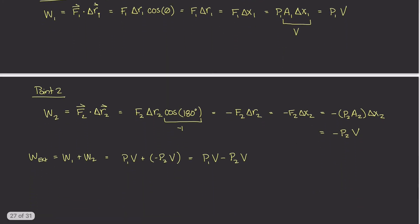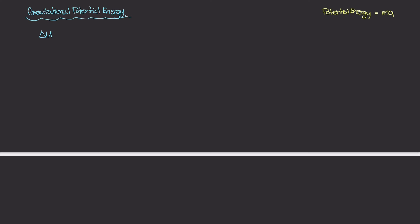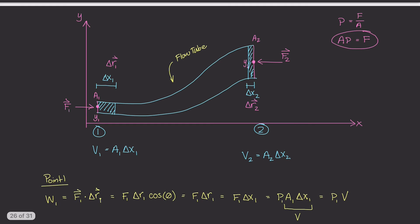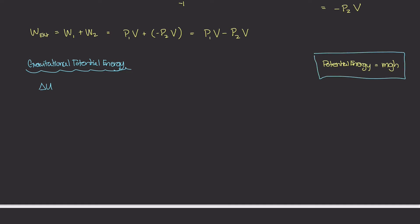Working on the gravitational potential energy — the delta-u term — from physics we know that potential energy is equal to mgh, where m is the mass, g is gravity, and h is the height from a datum. So the change in gravitational potential energy is going to be the difference in potential energy of points 0.2 and 0.1: mgy2 minus mgy1. We subtract those two terms and we get this delta-u value.